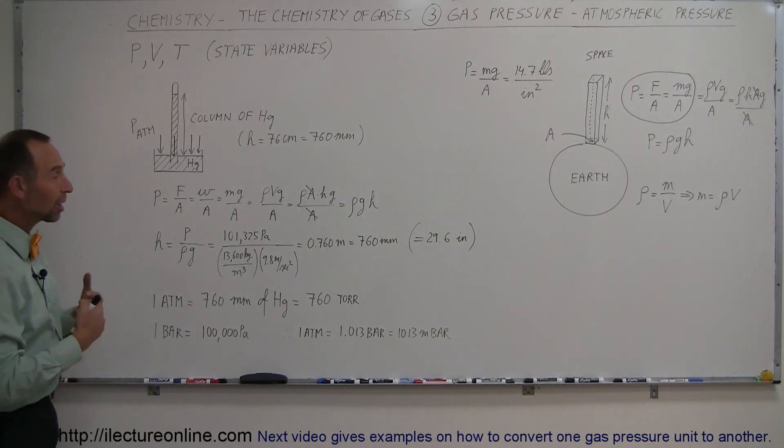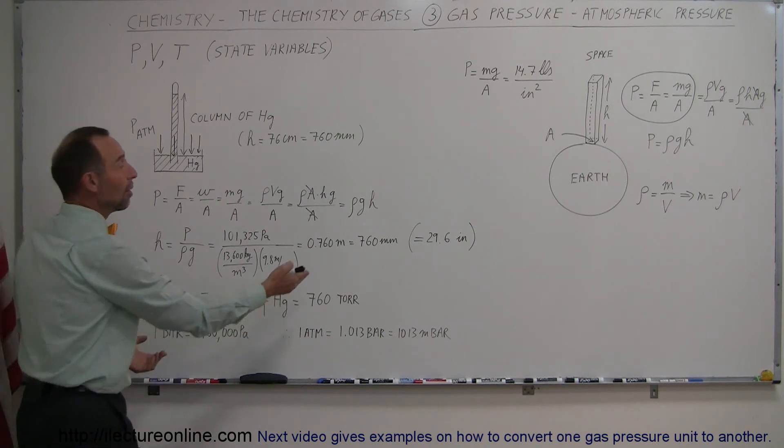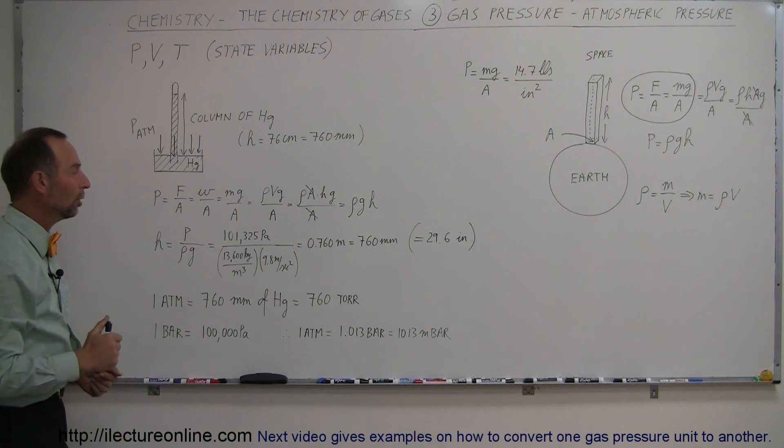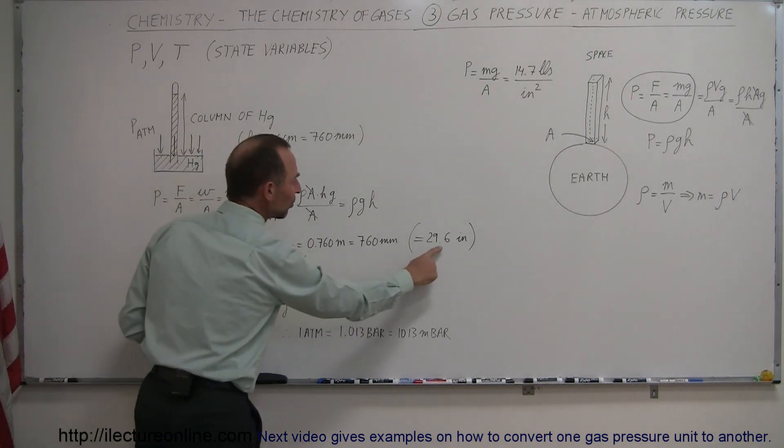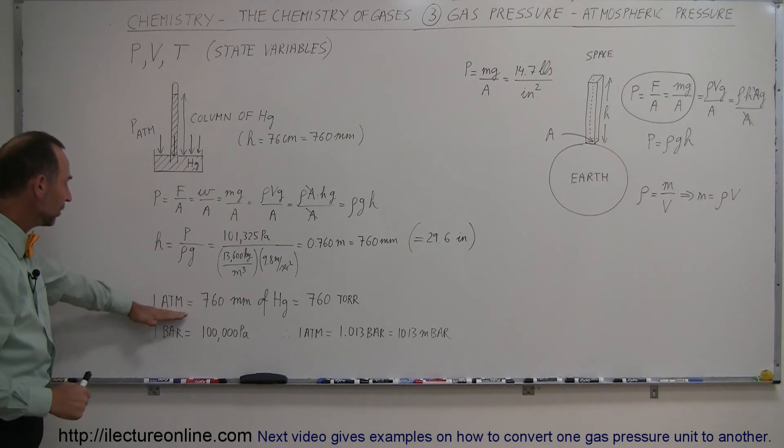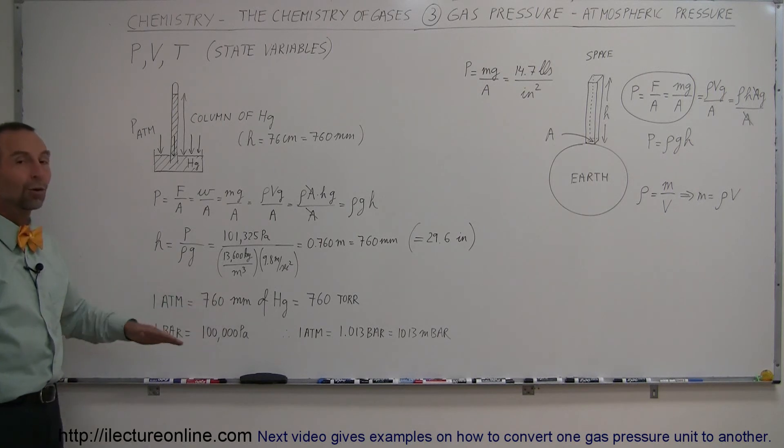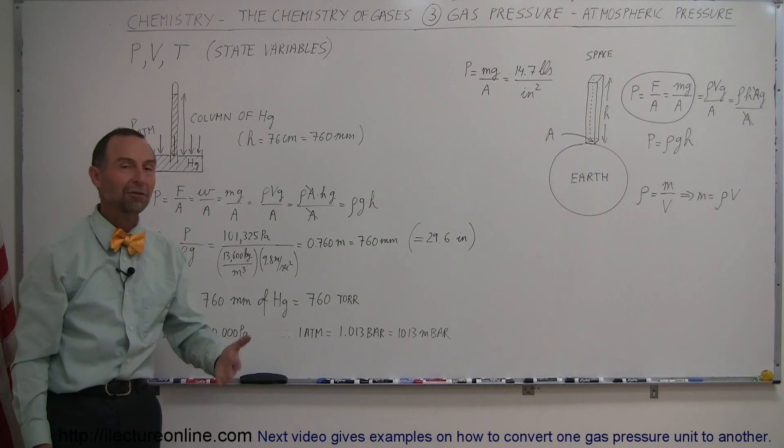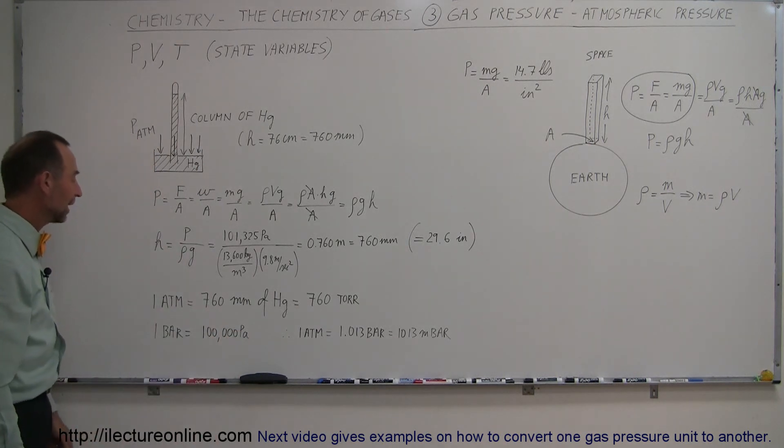And so now we talk about atmospheric pressure in terms of millimeters of mercury, how high a column of mercury it would support, converted to inches, that is 29.6 inches. And so now one atmosphere, that's the pressure caused by one atmosphere, is equal to 760 millimeters of mercury, or it's also now called 760 torr, of course, named after Torricelli, who figured that out.